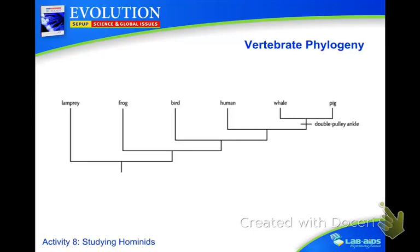So the idea is this. Remember last time we looked at how you can take specific structures and add them to an evolutionary tree and then be able to show relatedness. One of the things y'all learned last time is that whales are fairly closely related to pigs because of what's called the double-pulley ankle. There's a specific bone within the ankle — humans only have a single-pulley ankle. Now if we put a line right here at that node...